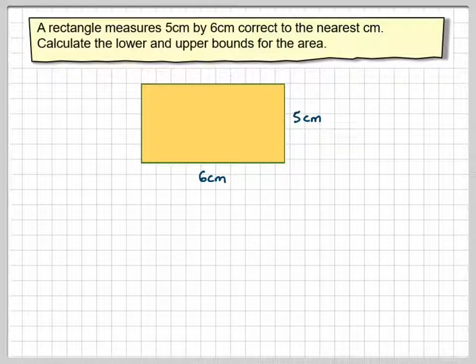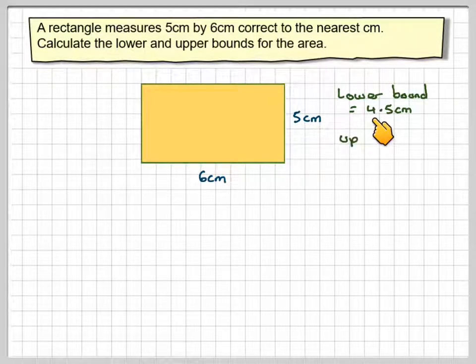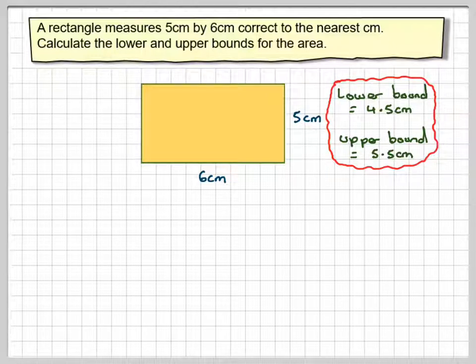We've got a rectangle which is 6 by 5. The lower bound for 5 is 4.5, so you will round that up to 5, and the upper bound will be 5.5.